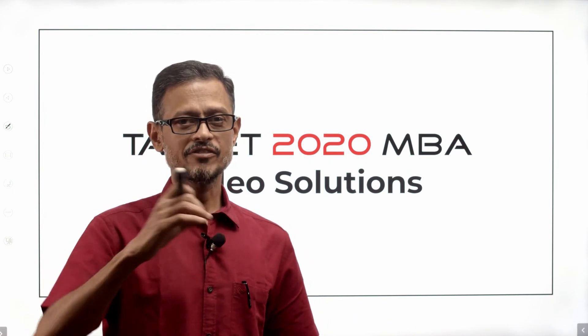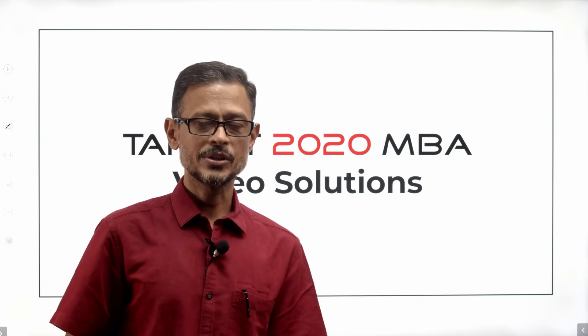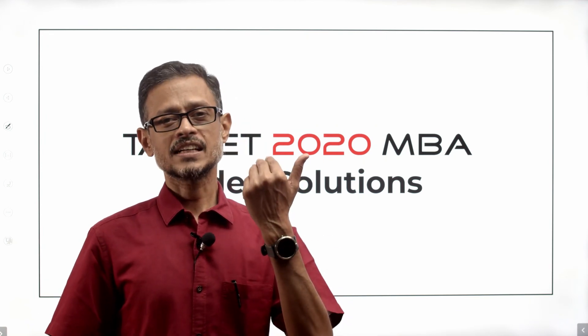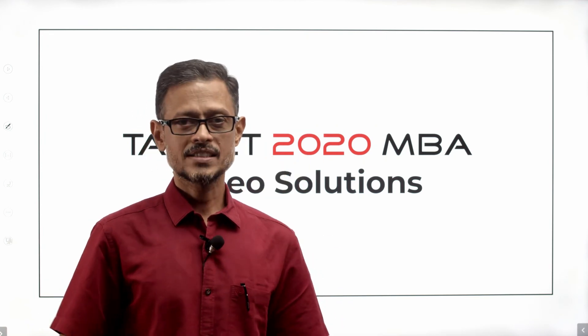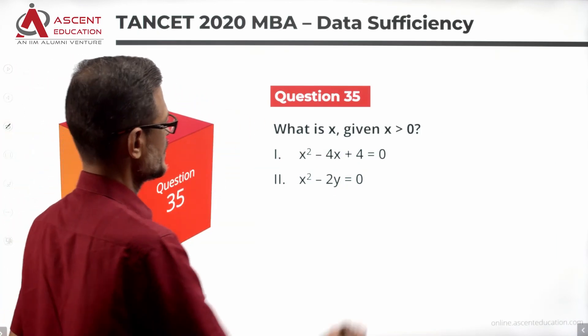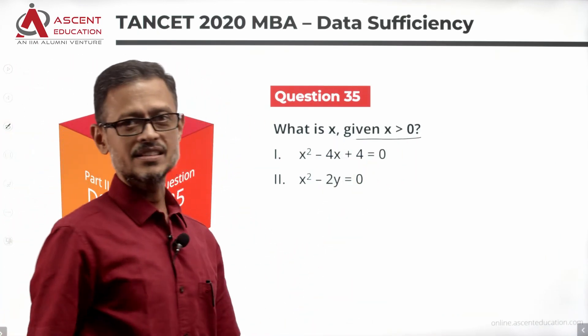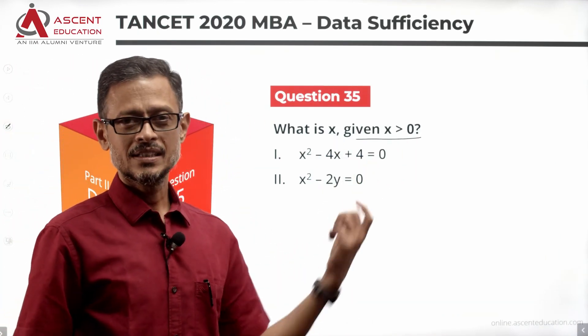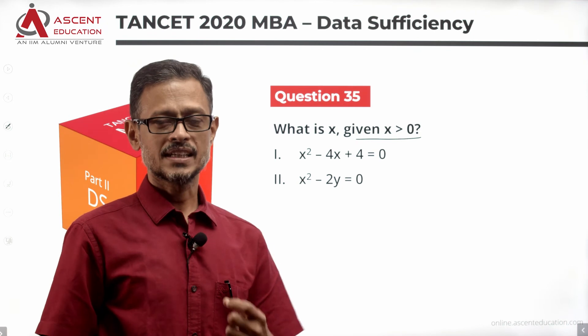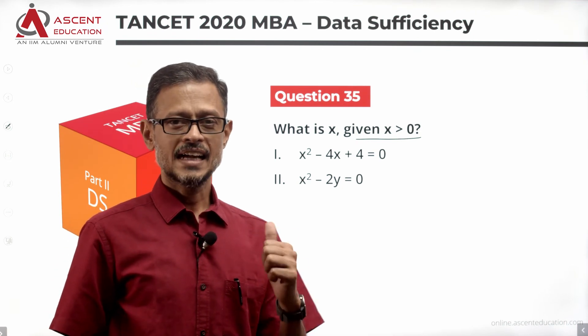The question is definitely answerable. You should be able to solve it in 30 seconds. Let's have a look at the question: What is x, given that x is a positive number, i.e., x is greater than 0? Let's take a look at the statements in a while.